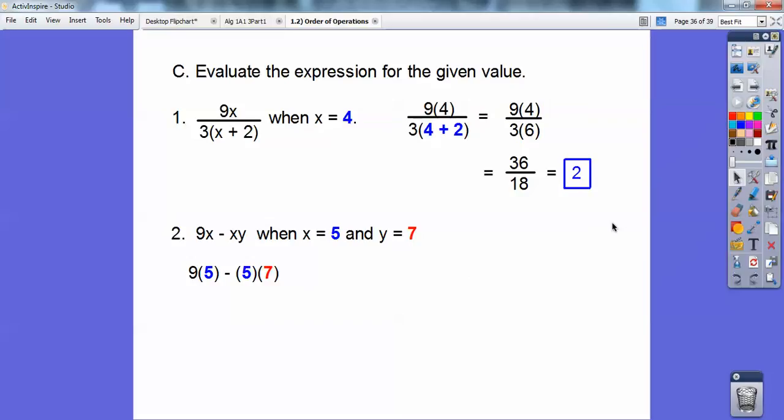Now I've got to do multiplying from left to right. So I'm going to multiply 9 times 5 is 45. 5 times 7 is 35. Now I can go ahead and subtract 45 minus 35 is 10. You can do this stuff. Good job, you guys.